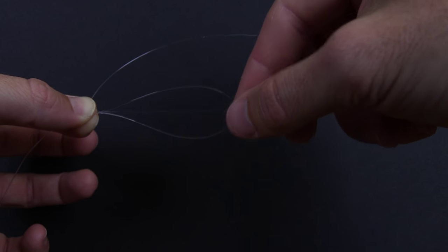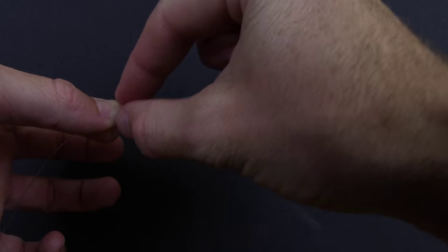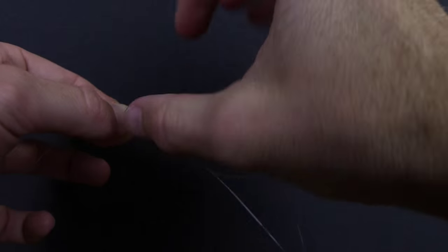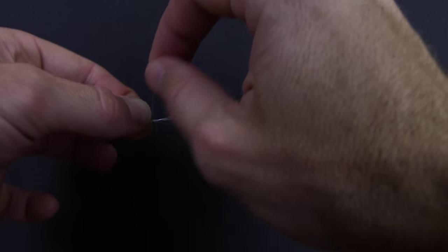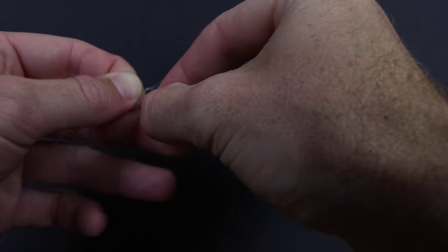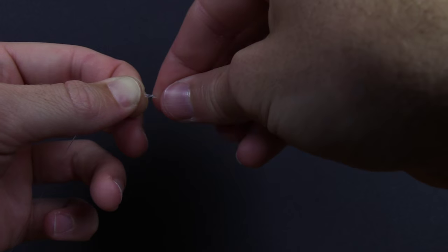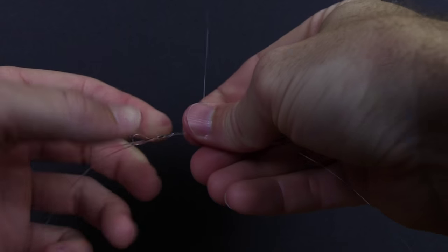We're just going to start wrapping it and make sure that they continually go in the same direction. There's two, three, four, five. Just to keep it all clean I'm going to move my back hand up a little bit.